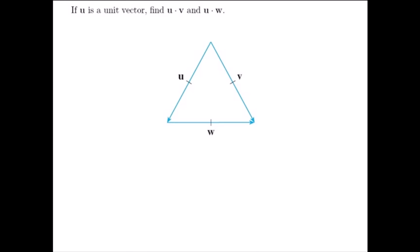If u is a unit vector, find u·v and u·w. You can see that these vectors are forming a triangle here, and these marks on each side tell us that the lengths of each side are the same. In other words, this is an equilateral triangle.